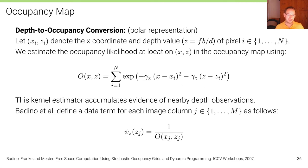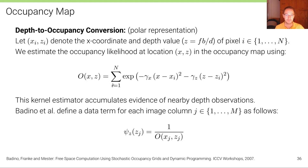Based on this, Badino et al. define a data term for each image column j, where we have m columns — say 640 columns for a VGA image — by simply taking the inverse of this occupancy likelihood as the data term. So where we want a large likelihood in the occupancy map, we want a small value in the data term because we take the inverse.